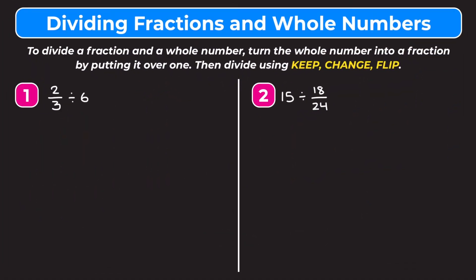In this video we're learning how to divide fractions and whole numbers. To divide a fraction and a whole number, turn the whole number into a fraction by putting it over 1, then divide using keep-change-flip. We're going to turn the whole numbers into fractions by putting them over 1 and then divide like we normally would using keep-change-flip.